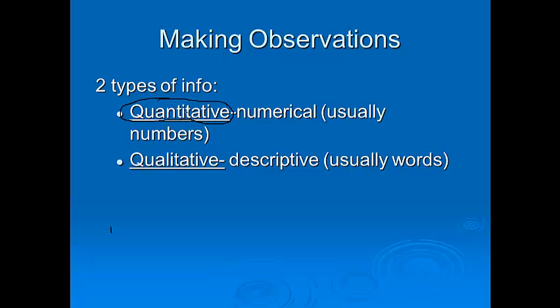The first is quantitative, and if you look at the beginning, quantity usually refers to numbers. So if it's a quantitative observation, this is something that involves numbers. For example, when we were massing spaghetti, you may have had a piece of spaghetti that was 0.970 grams. This would be an example of a quantitative observation.